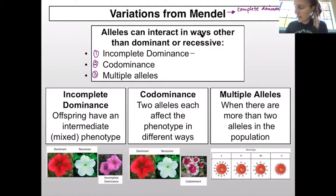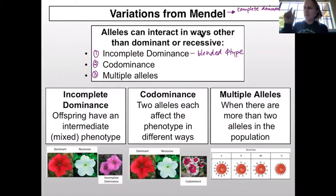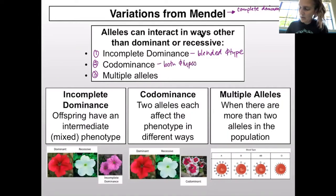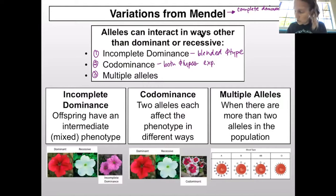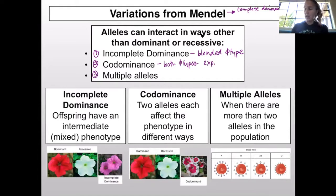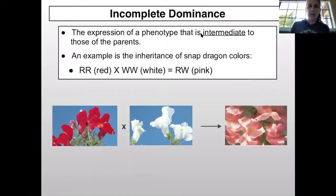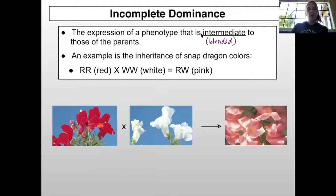Incomplete dominance gives a blended phenotype. For codominance, both phenotypes of the parents are expressed. For multiple alleles, instead of just two alleles in a population, organisms can have more than two. Remember, if we are diploid, every individual only has two alleles — one from mom and one from dad. But in the population, you can have more, and we'll look into that with blood types.